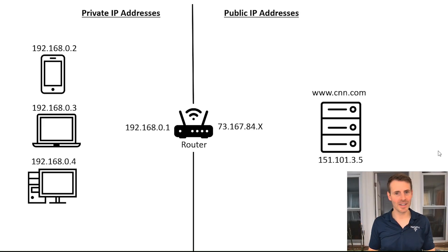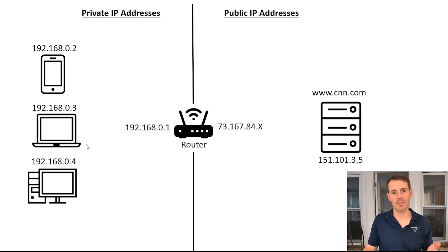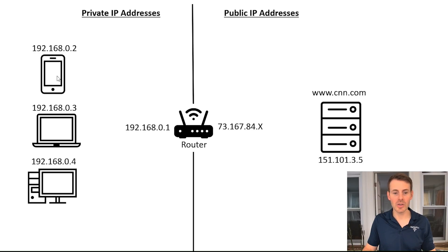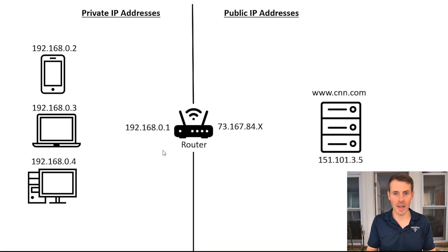Here's a simplified illustration of your home network. On the left-hand side, let's say you have three devices: a mobile phone, laptop, and desktop. All of these devices are assigned a private IP address from your router — .2, .3, .4 — assigned by your router, which has a 192.168.0.1 private IP address.